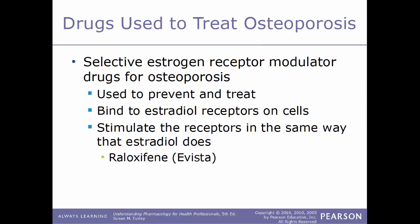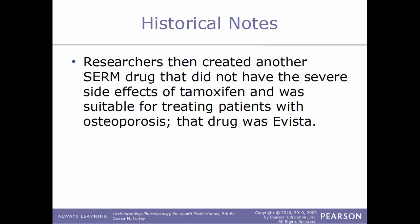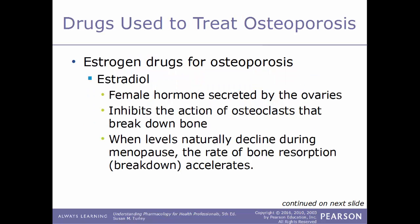Another type of drug used to treat osteoporosis are selective estrogen receptor modulators (SERMs). These work by binding to estradiol receptors on cells and stimulating those receptors in the same way estradiol does. An example is raloxifene, sold under the trade name Evista. Previously, the SERM tamoxifen was being used to treat breast cancer, and it was discovered that patients taking it showed very positive effects on bone. Researchers then created another SERM — Evista — that did not have tamoxifen's severe side effects and was suitable for treating osteoporosis.